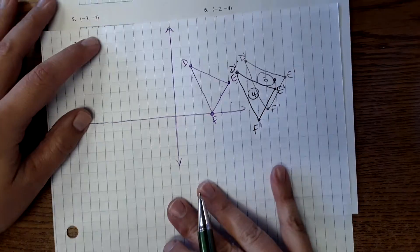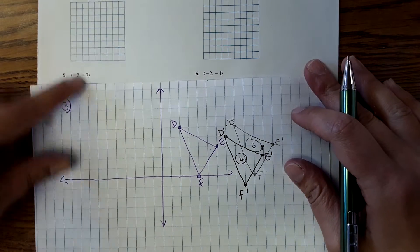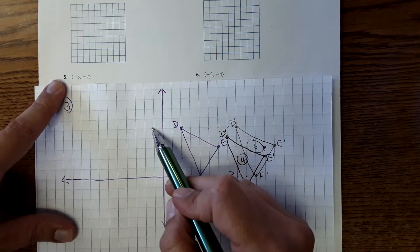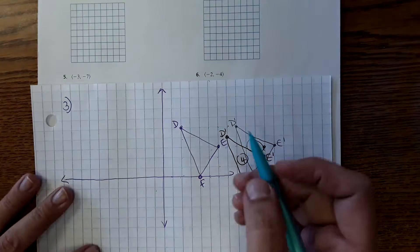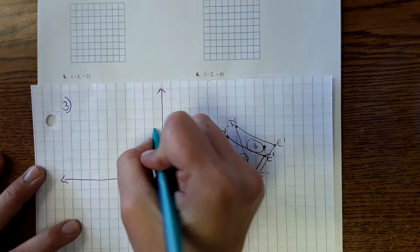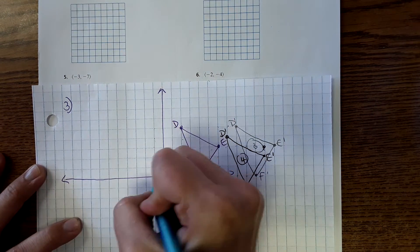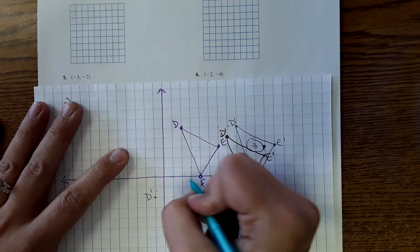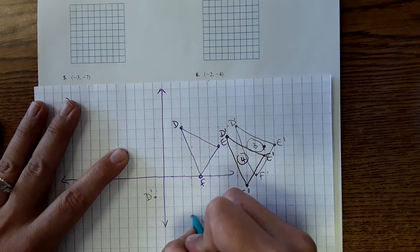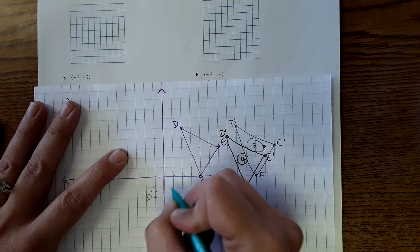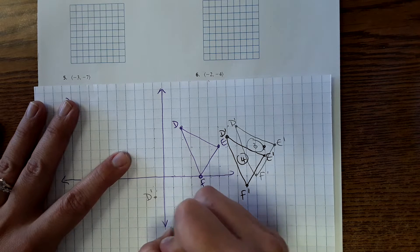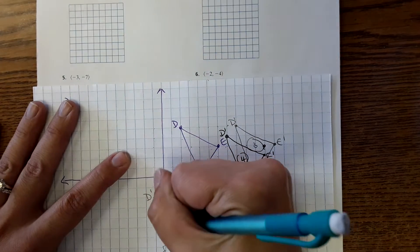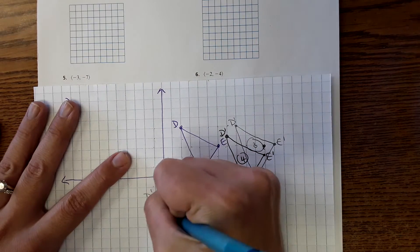Okay, number 5, it gives us the vector negative 3, negative 7. So now, from the original, our pre-image, we're going to the left 3, down 7. Again, using the same graph, I don't need to draw it again. Left 3, down 7. So here is D prime, E prime, and F prime. Okay, so then this would be number 5.